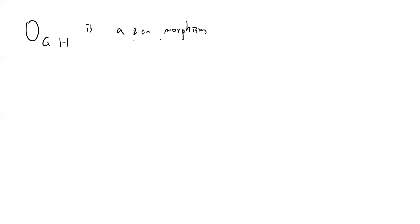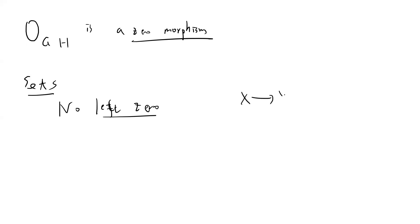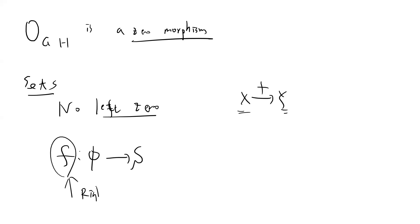For example, given two groups, the zero group homomorphism is a zero morphism — simple to check because the identity maps to identity. In sets, there is no left zero morphism because there is no canonical choice for f. However, if you map from the empty set to a set X, that gives a right zero morphism, since the empty set provides a canonical choice.